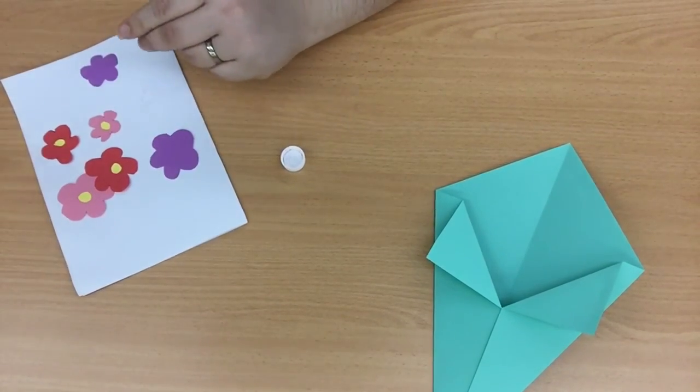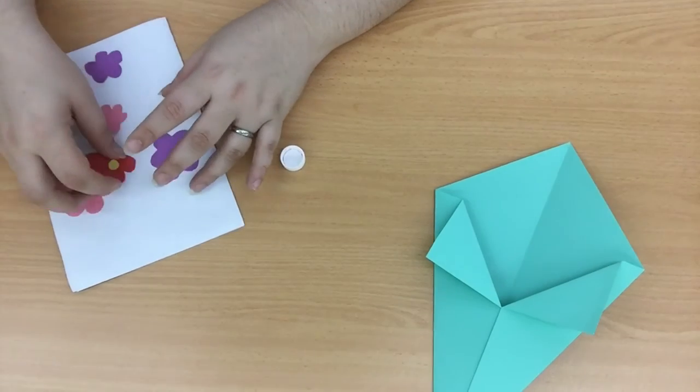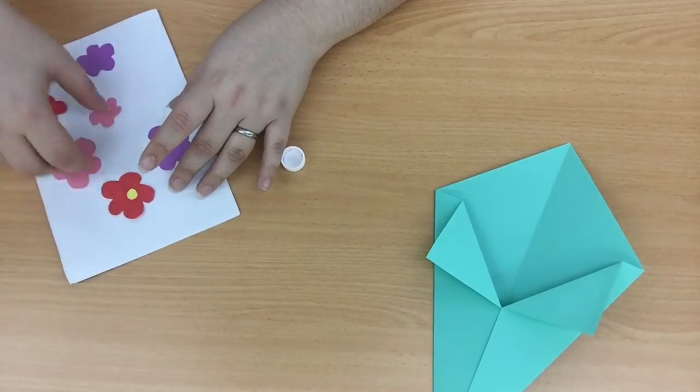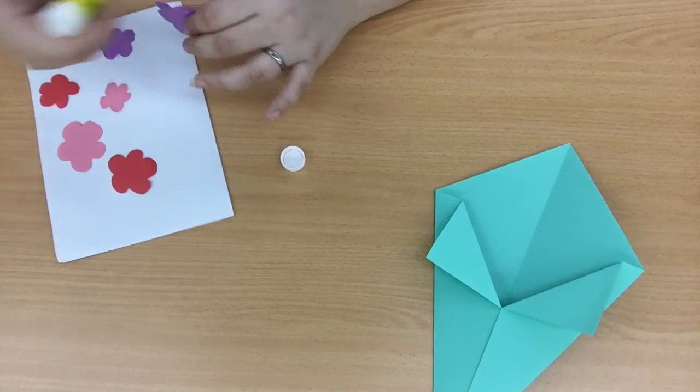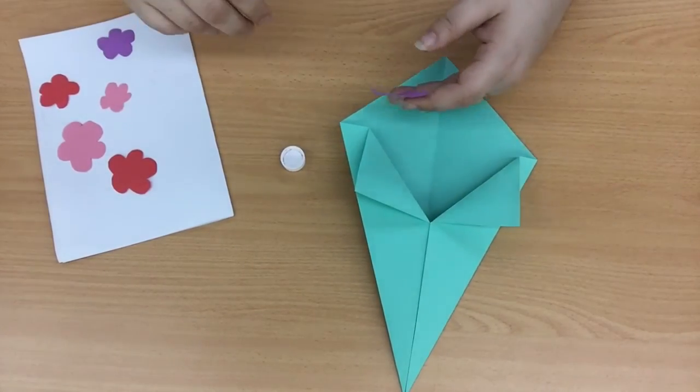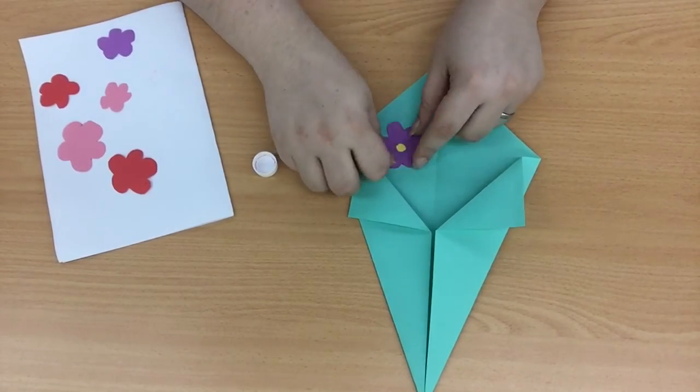With all the centers now on our flowers, it's time to glue our flowers into their bouquet. Simply flip your flowers over on your scrap piece of paper to make sure all the centers are facing down and apply glue on them. Then place your flowers wherever you feel they'll look best. I'm starting off with my big flowers.